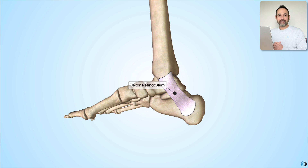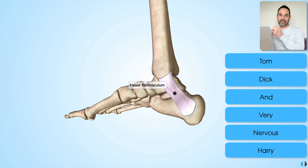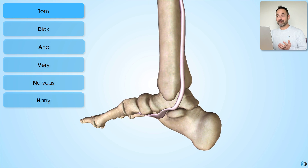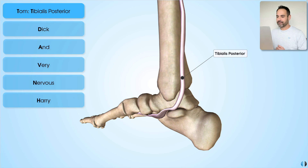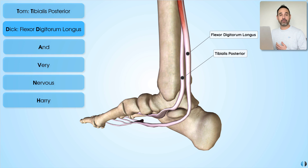There's a catchy phrase you'll hear time and time again that denotes the different structures that run through the tarsal tunnel. That phrase is Tom, Dick and Very Nervous Harry, whereby the first letter of each word tells you the different structure that runs through it. Tom stands for tibialis posterior, a key muscle involved in walking and maintaining the arch of the foot. Dick stands for flexor digitorum longus, which is responsible for flexing the toes and involved in various ankle and foot movements.